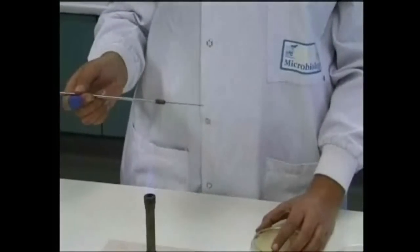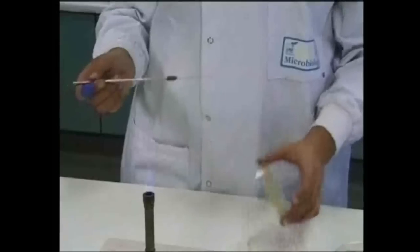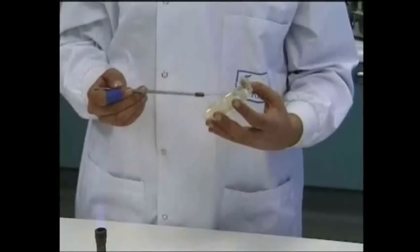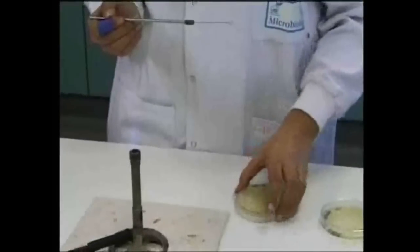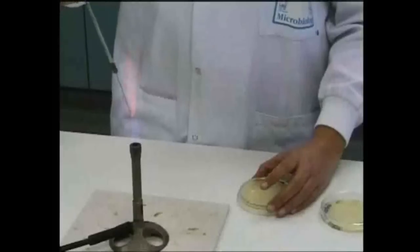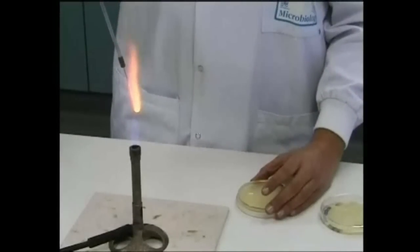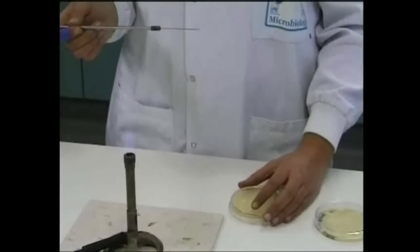The second sector of the plate should now be streaked by drawing some of the original inoculum from the first sector with the sterilized loop. Again, the lid is replaced and the loop flamed and cooled before streaking the third area of the plate, drawing from the second streak.